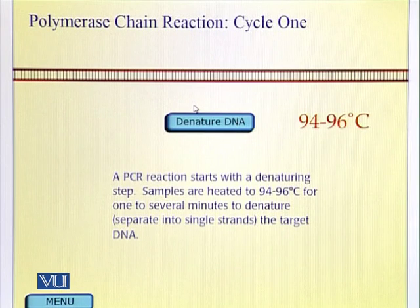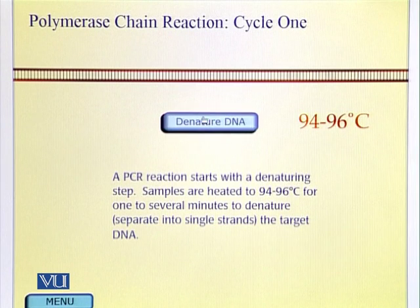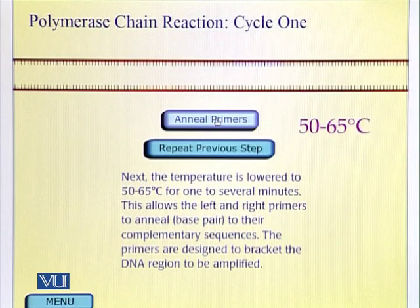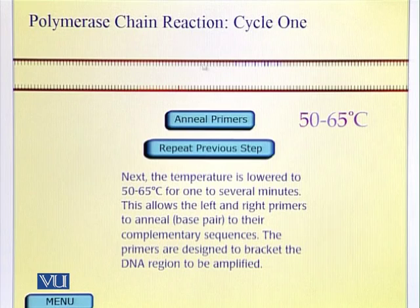Denaturing means separating the two DNA strands. We are going to break the hydrogen bonds. In our cell, the same function is done by helicase enzyme. Here in the PCR machine, as I said, it's basically a fancy machine that regulates the temperature of the sample. First we are going to raise the temperature to 94 to 96 degrees.